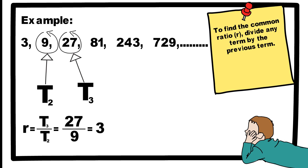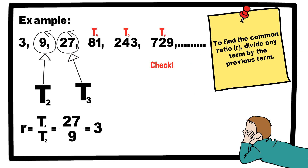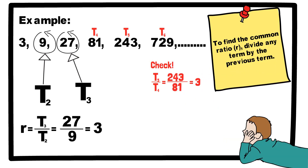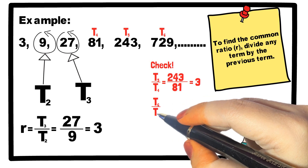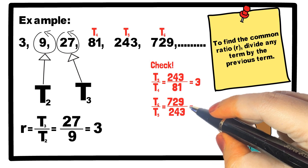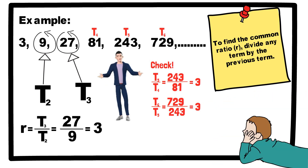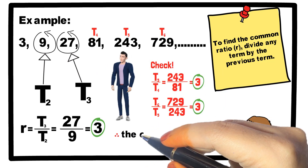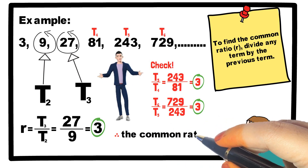The common ratio is the amount between each number and the number in the sequence. If you divide and find that the ratio between each number in the sequence is not the same, then there is no common ratio, and the sequence is not geometric.